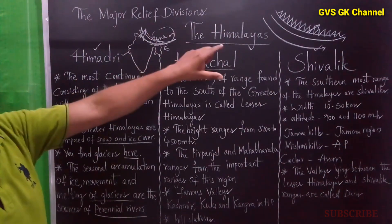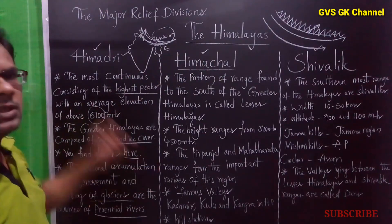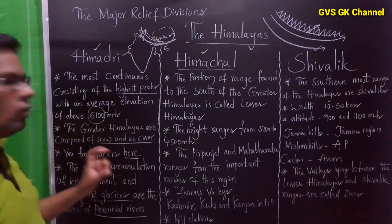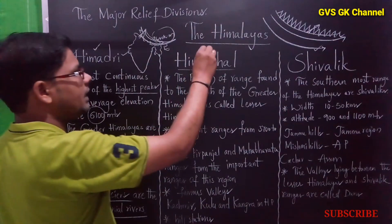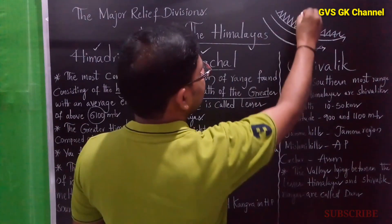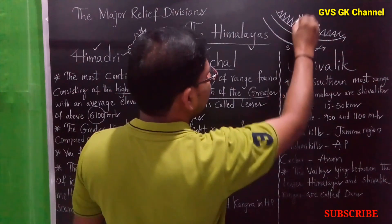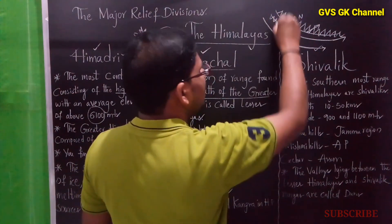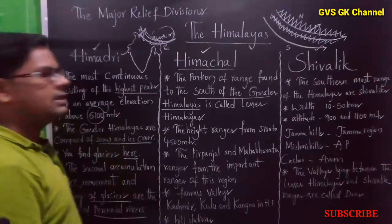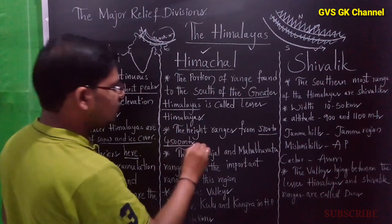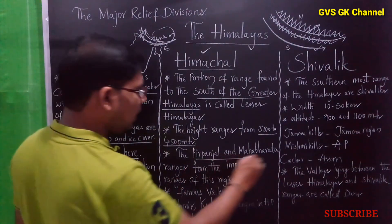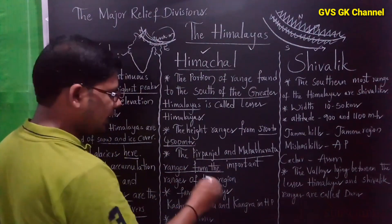To summarize: Himadri is the northernmost range of the Himalayas, consists of the highest peaks, with an average height of 6100 meters, and is completely covered with snow and ice. The second range, the Himachal or Lesser Himalayas, is found to the south of the Greater Himalayas. Its average height is 3700 to 4500 meters. The Pirpanjal and Mahabharata ranges form the important ranges of this region.